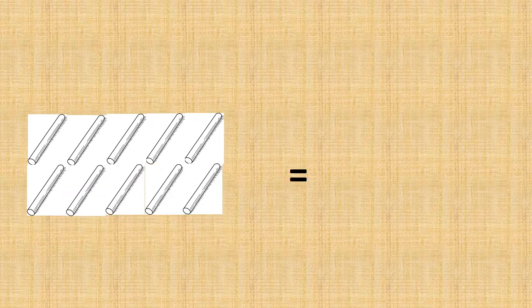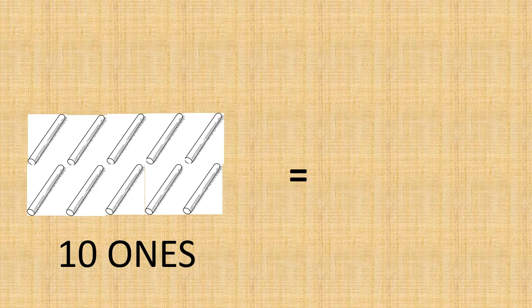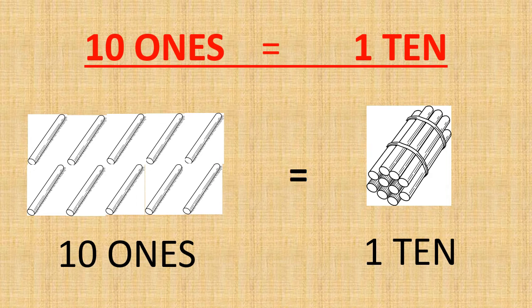Now let's count how many ones do we have here. One, two, three, four, five, six, seven, eight, nine, ten. Then we have ten ones. When ten ones are grouped together, we call it one ten. So ten ones is equal to one ten.